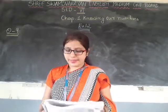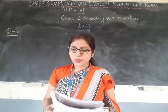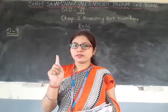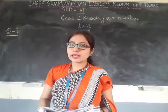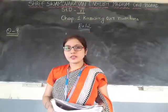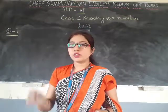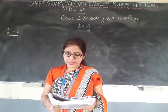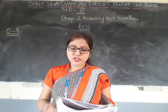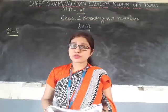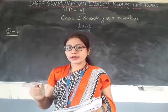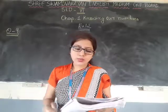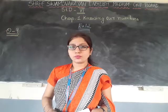Now we will start question number 9. To stitch a shirt, 2 meter 15 cm cloth is needed. Out of 40 meter cloth — total length of cloth is given as 40 meter — how many shirts can be stitched and how much cloth will remain? In the question it is asked: from the total cloth given, how many shirts can be made if each shirt requires 2 meter 15 cm?